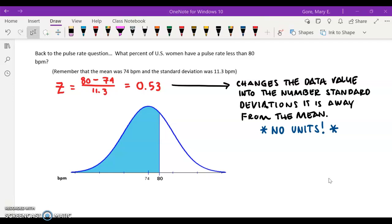Let's pick up where we left off in the lesson. What percent of U.S. women have pulse rates less than 80 beats per minute? This is working off of a problem where the mean was 74 beats per minute and the standard deviation was 11.3 beats per minute.